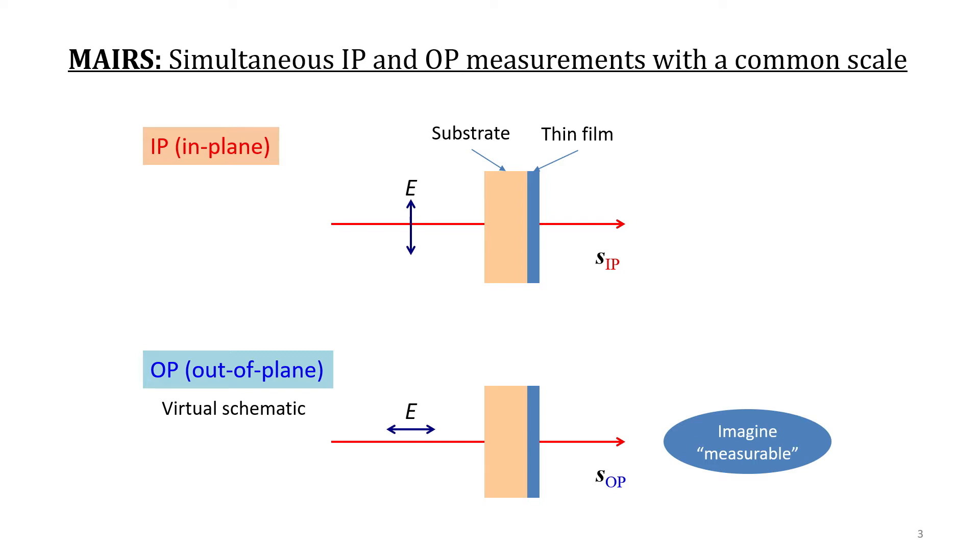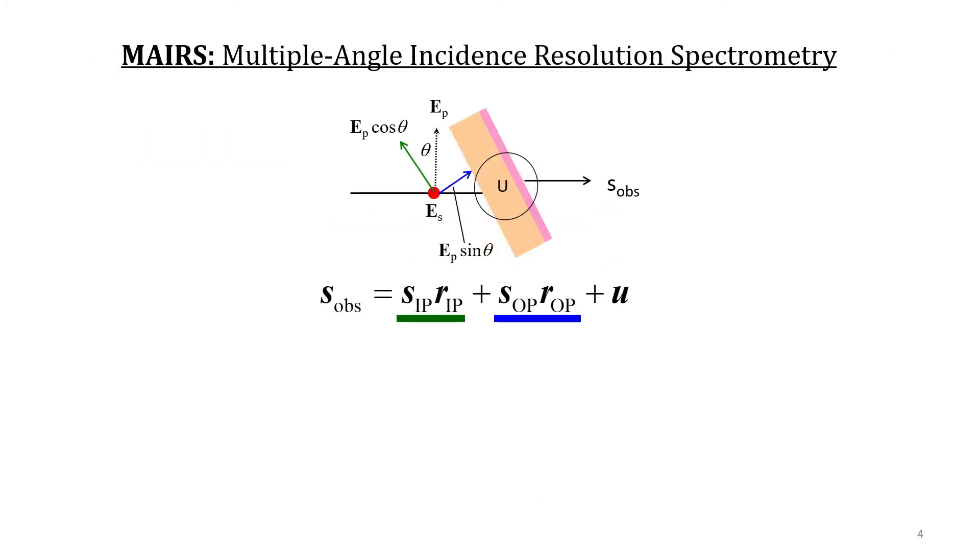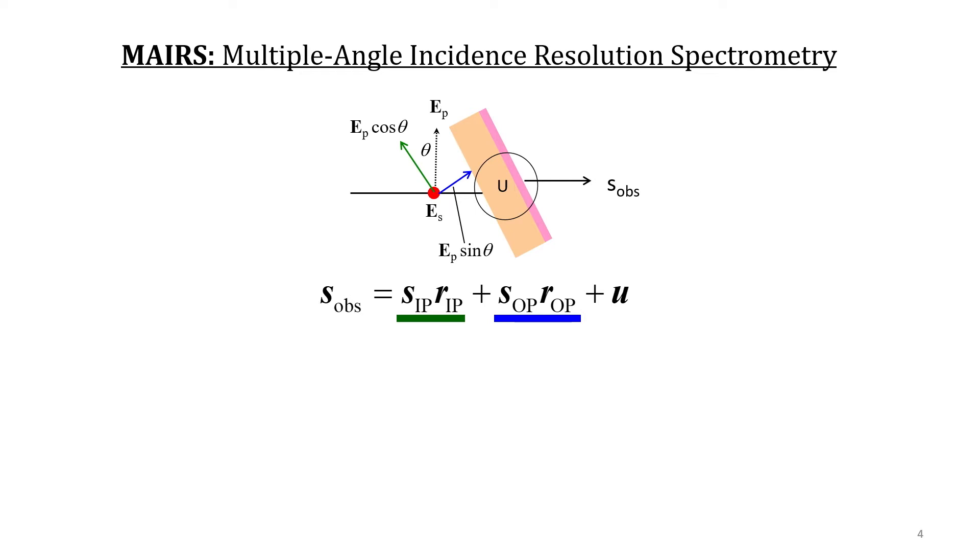This schematic cannot directly be carried out, but it can be involved in a regression equation if the measurement is imagined to be possible. The actual measurements are performed on FTIR, and the light intensity is measured at different angles of incidence that are specifically determined a priori depending on the substrate of the sample. The collected spectra are decomposed to have the IP and OP spectra as the least squared solution of the regression equation.